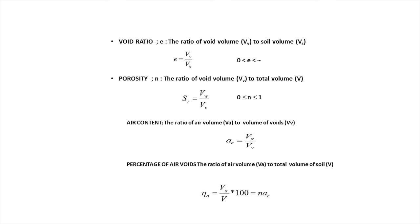Void ratio is defined as the ratio of void volume to volume of solids: E = Vv / Vs. Porosity is the ratio of void volume to total volume. Air content is the ratio of air volume to volume of voids.